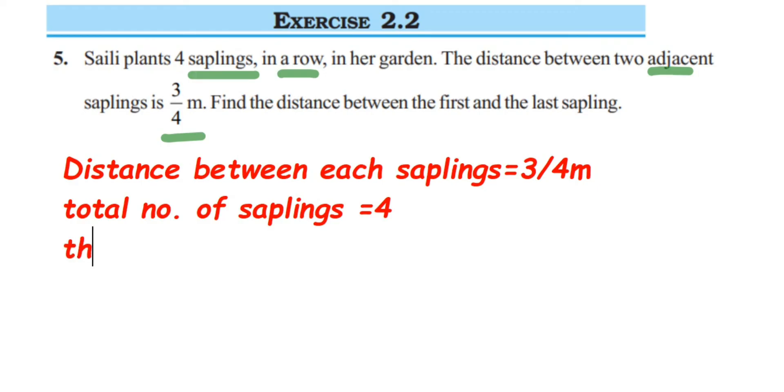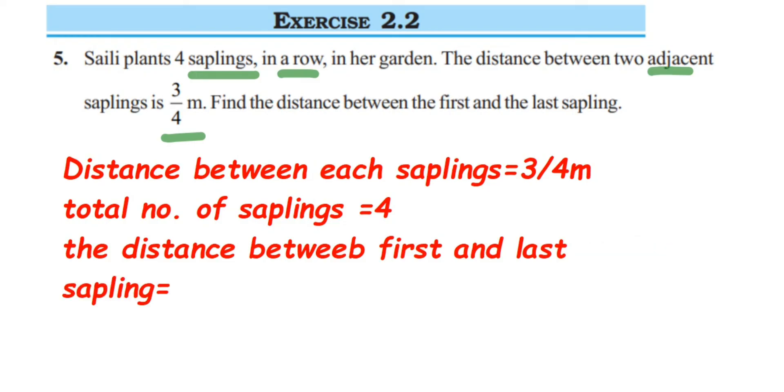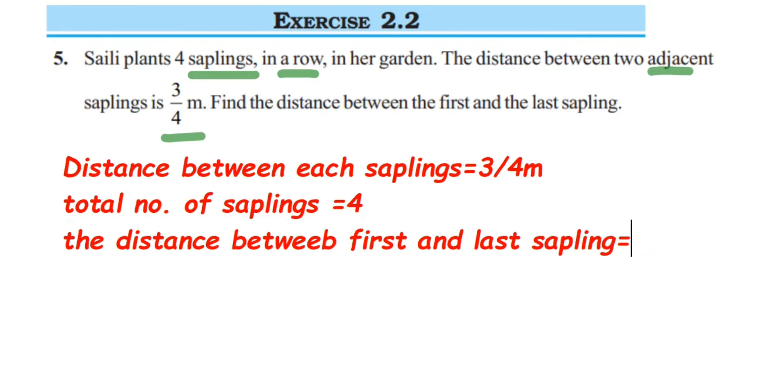Now, we have to find out the distance between the first one and the last one. Therefore, the distance between first and last sapling is equal to... I just showed you how it is 3 into 3 by 4 because the distance between each sapling, let me explain once again. This is the first one, this is second one, this is third one, fourth one.